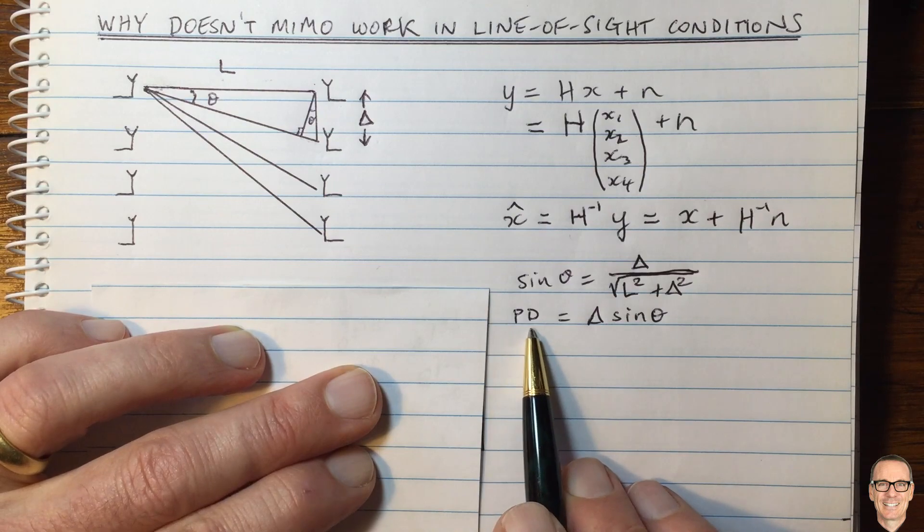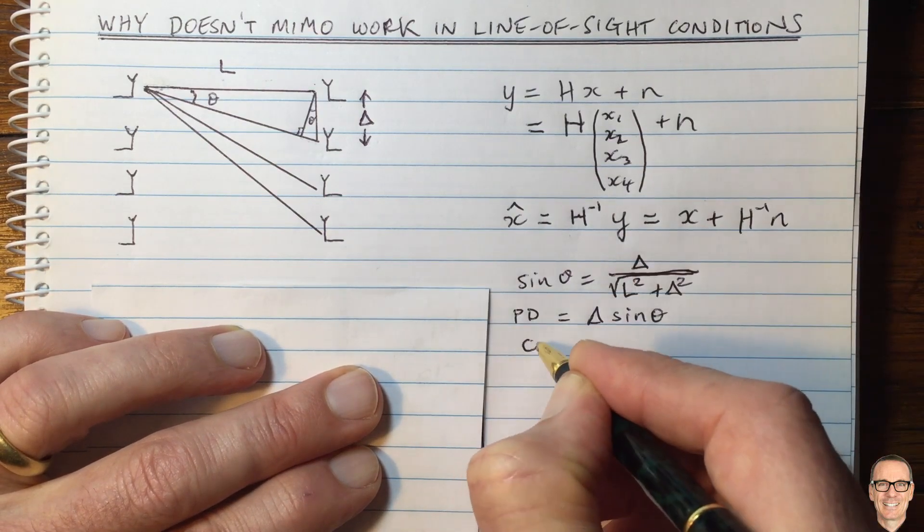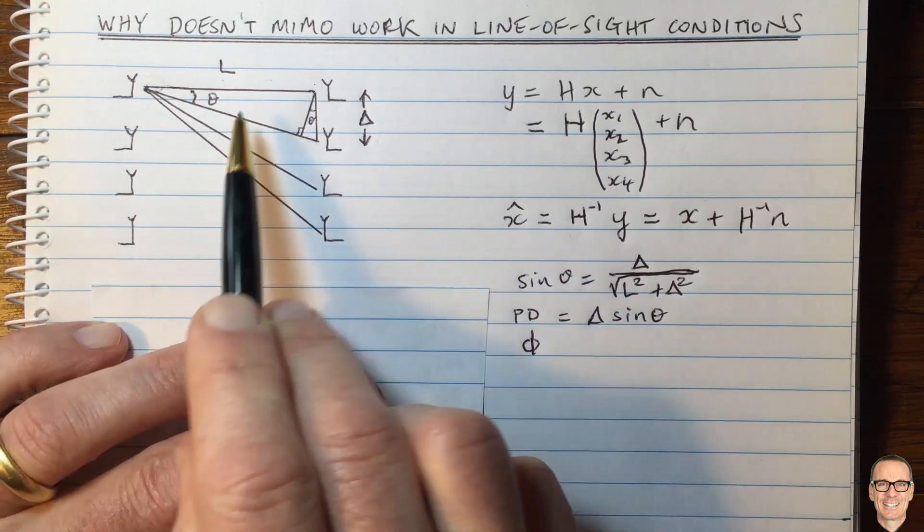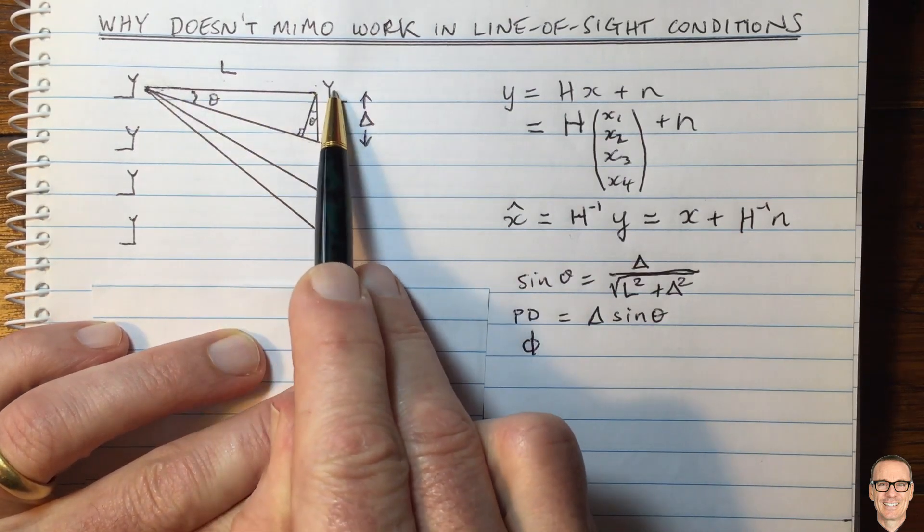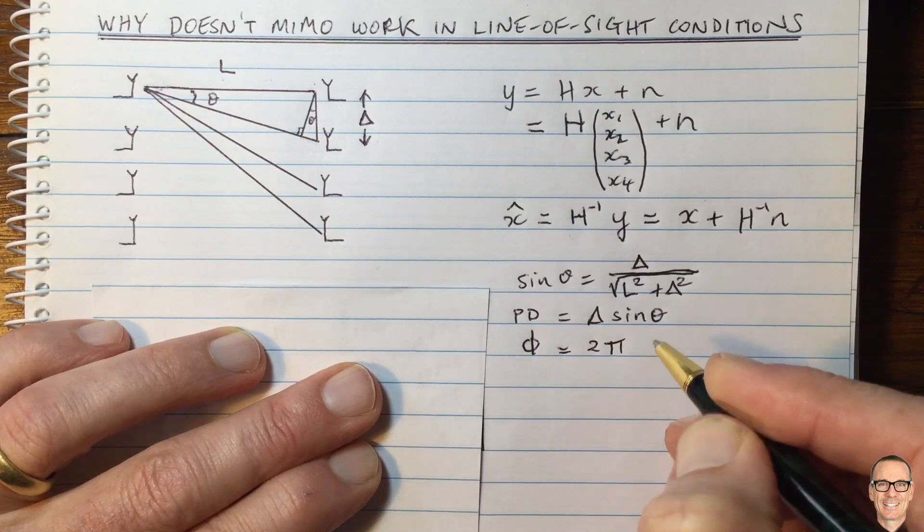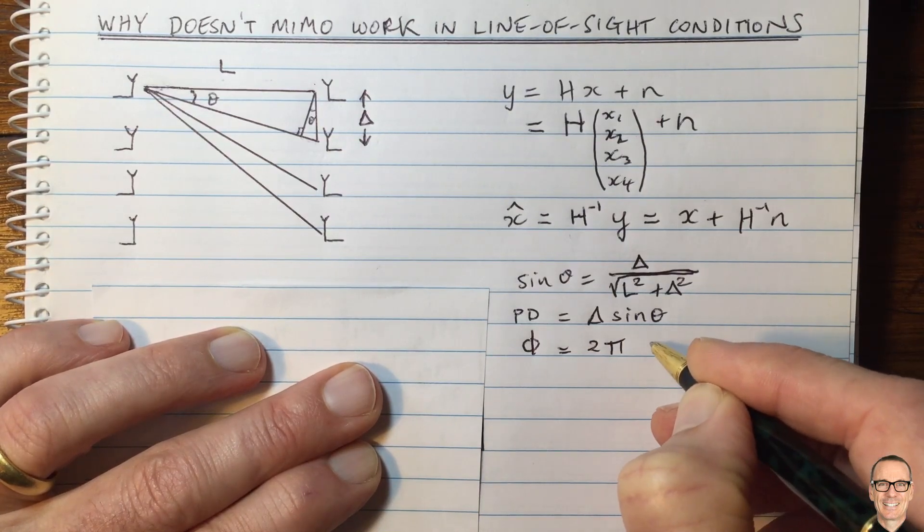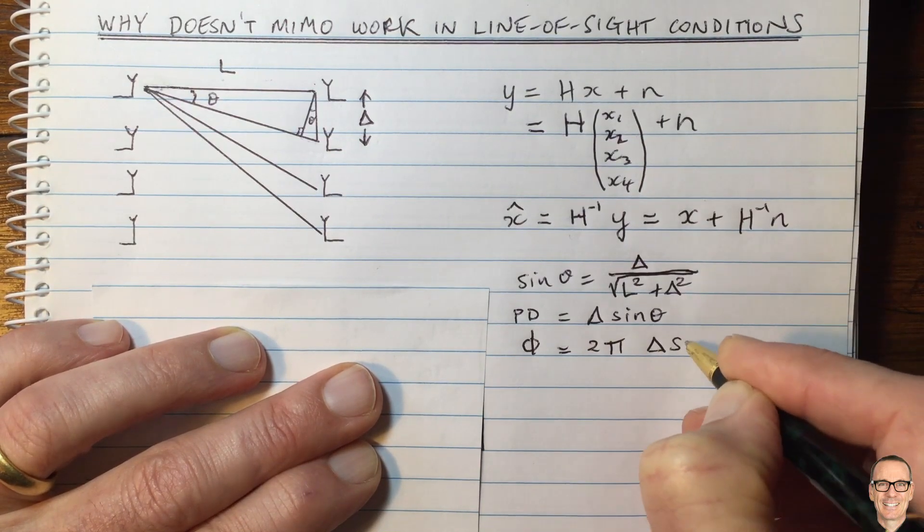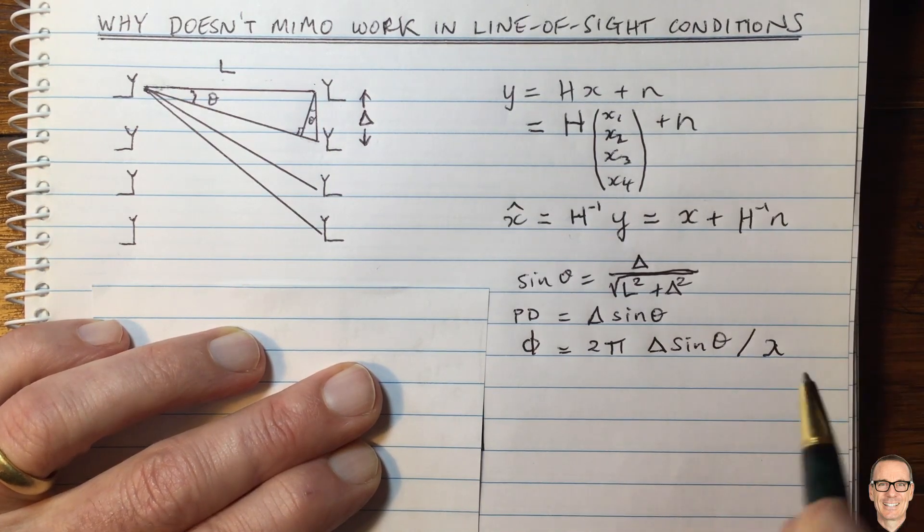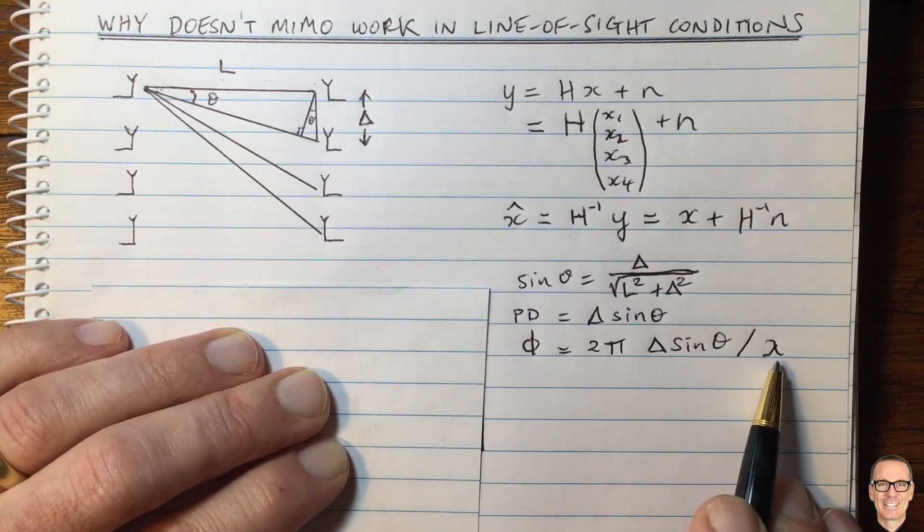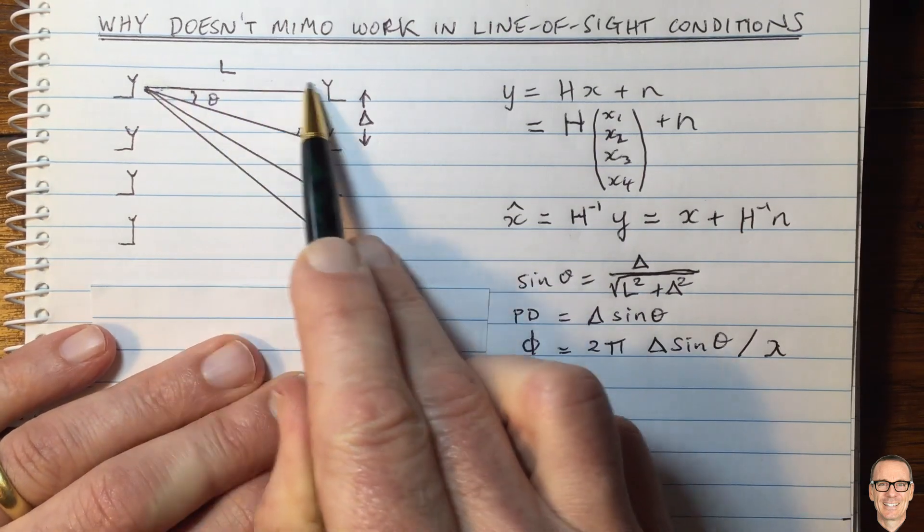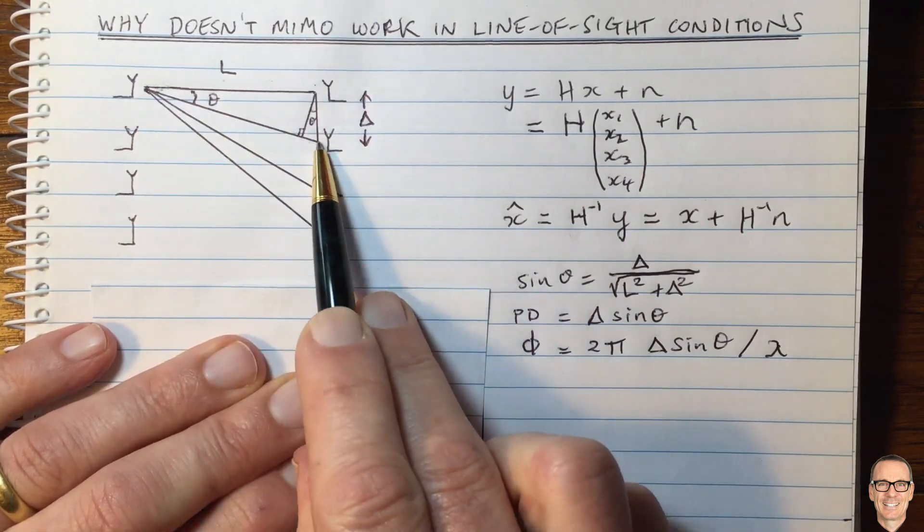Then we can relate that to the phase difference. I'm going to use the symbol phi for this. This is the phase difference between the waveform arriving at this antenna and the waveform arriving at this antenna. That phase difference is going to be 2 pi times the path difference, delta sine theta, divided by the wavelength of the signal that we're transmitting, the carrier frequency.